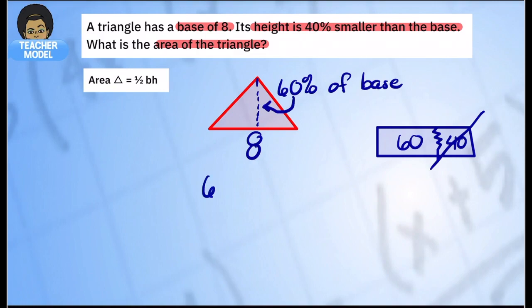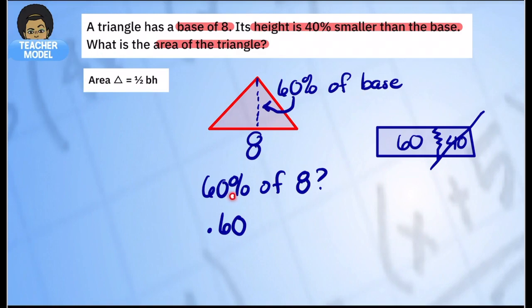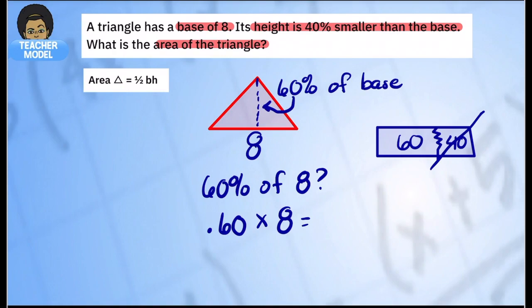What is sixty percent of eight? We take sixty percent and turn it into a decimal — put a decimal on the back and move it two places to the left, giving us 0.60. Then we multiply: six times eight is forty-eight, so sixty times eight is four hundred eighty, and moving the decimal two places gives us four and eight-tenths. So the height is 4.8.